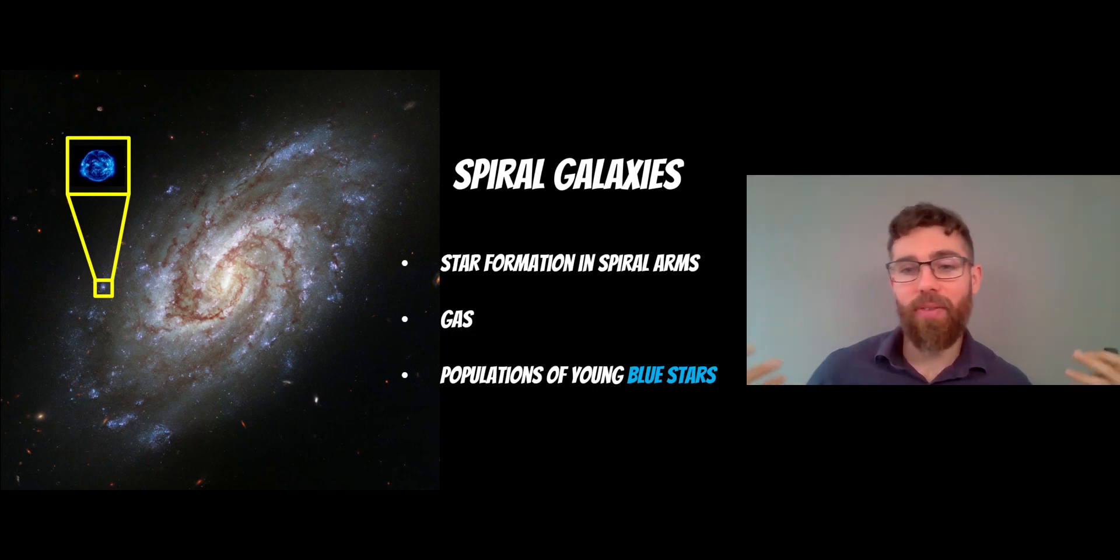They have spiral arms, which make them stand out. They have a reasonable amount or lots of gas in them. They have populations of young blue stars. You can see from this image here of this spiral galaxy, they've got lots of blue stars in there. They have a spiral arm structure.